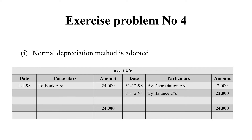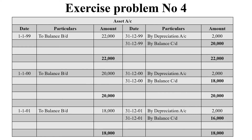Next year, we will see the next slide. Over the five years being written down, as on 1.1.1999, the previous year balance brought down is Rs. 22,000. On that year the depreciation is Rs. 2,000, so the value of the asset as on 31.12.1999 becomes Rs. 20,000. Moving to the following year, after deducting Rs. 2,000 depreciation, the value of the asset becomes Rs. 18,000.